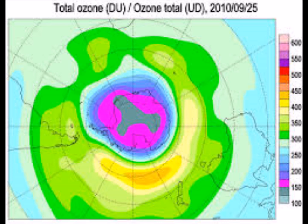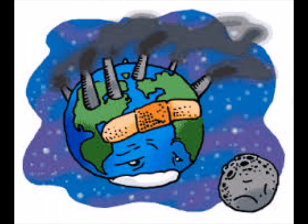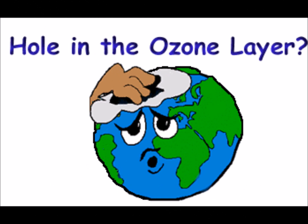CFCs are responsible for degrading the ozone layer. When chlorofluorocarbons rise to the stratosphere, they begin to be broken down by UV rays. The radiation releases chlorine, which removes one ozone from the O3 equation, turning the ozone back to oxygen.